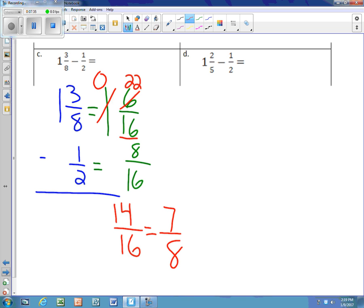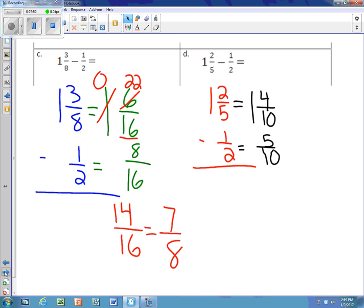Next, we have 1 and 2/5 minus 1/2. When we go through these, they both can become 10. I have to borrow. I have to add 10 plus 4. When I do that, I end up with 14. 14 minus 5 is 9/10.